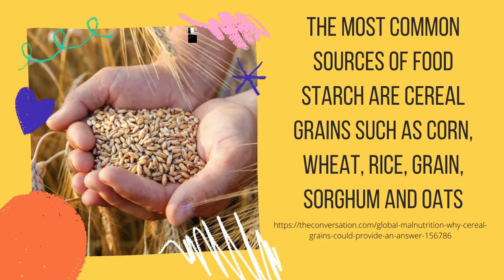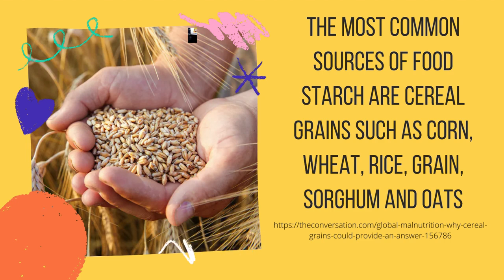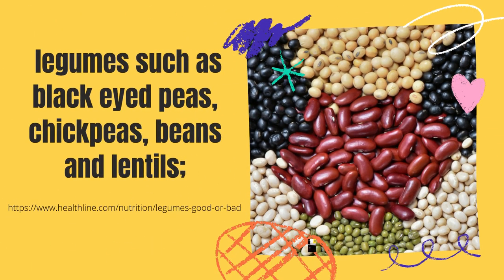The most common sources of food starch are cereal grains such as corn, wheat, rice, grains, sorghum, and oats.